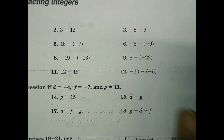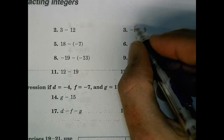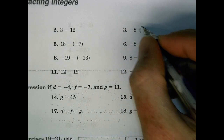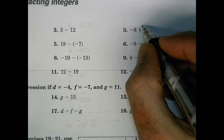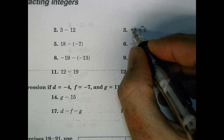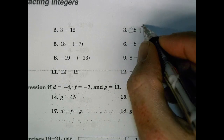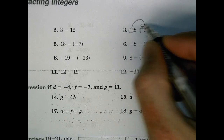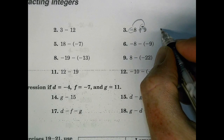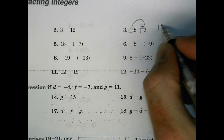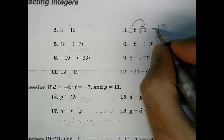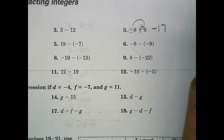Number 3: add the opposite. Signs are the same, so find the sum: 8 plus 9 is 17, and keep the sign the same — negative 17.